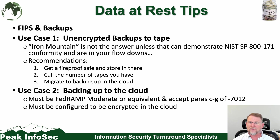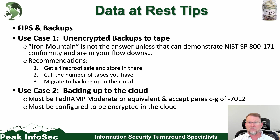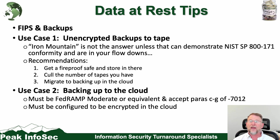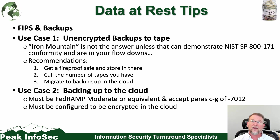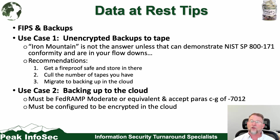For use case two — backing up to the cloud — you're now in configuration territory. The cloud service provider must be FedRAMP Moderate or equivalent and must accept paragraph C through G of DFARS 7012. The storage must be configured to be encrypted in the cloud. You can use Microsoft Azure Backup in GCC High and still have it misconfigured. The same applies to AWS Glacier — you are responsible for encrypting the data and ensuring correct configuration, not AWS or Microsoft.